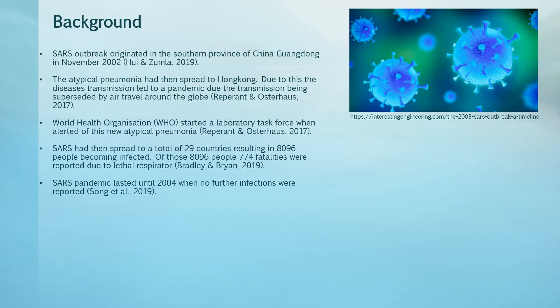The SARS outbreak originated in China's southern province Guangdong in November 2002, first reported as an atypical pneumonia. This atypical pneumonia spread to Hong Kong, and due to air travel from Hong Kong it spread globally. This raised the World Health Organization's attention, leading them to develop a task force of laboratories around the world that identified the SARS coronavirus as the causative agent. As a result, SARS spread to 29 countries, infecting 8,096 people and causing 774 fatalities due to severe pneumonia.